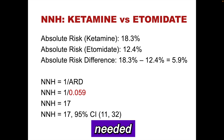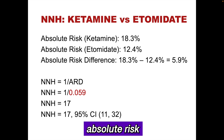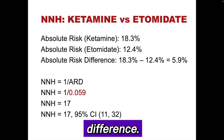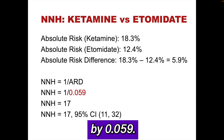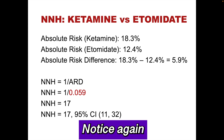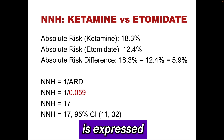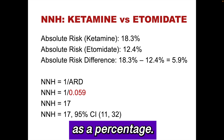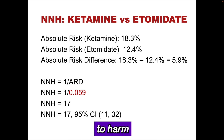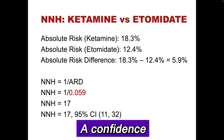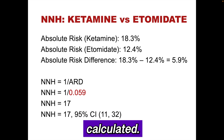The number needed to harm is 1 divided by the absolute risk difference. This becomes 1 divided by 0.059. Notice that the absolute risk difference in the denominator is expressed as a decimal, not as a percentage. The number needed to harm we calculate is 17. A confidence interval for the number needed to harm can also be calculated.